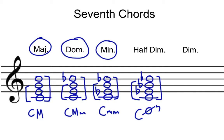So first we had a C major 7 chord, then a C major minor 7 usually called just a dominant 7, then C minor minor 7 usually just called a minor 7. The chord lingo would usually not have two M's, just one. And then a C half diminished 7 — that circle with a slash through it is the symbol for half diminished.